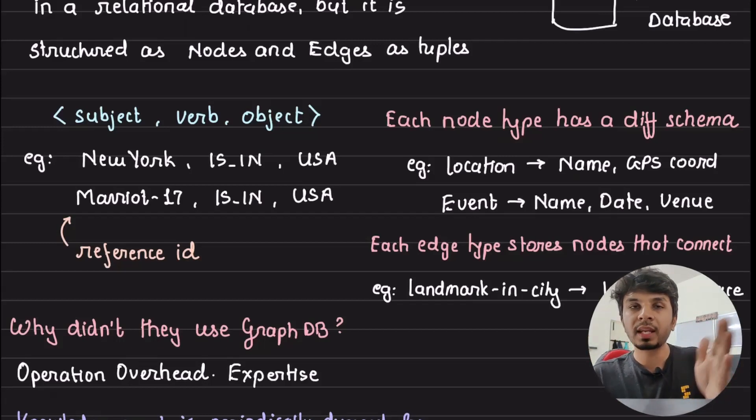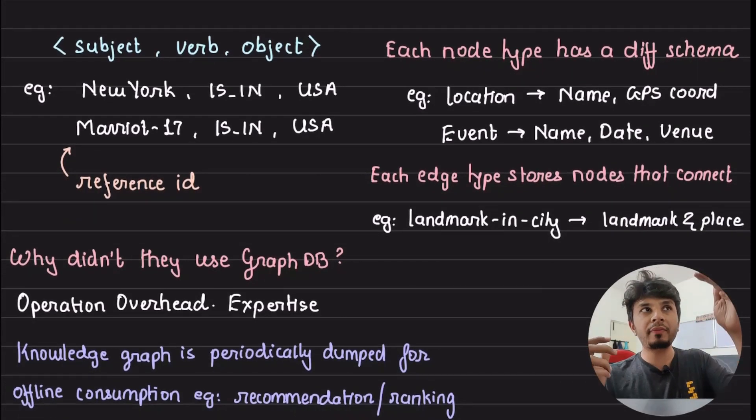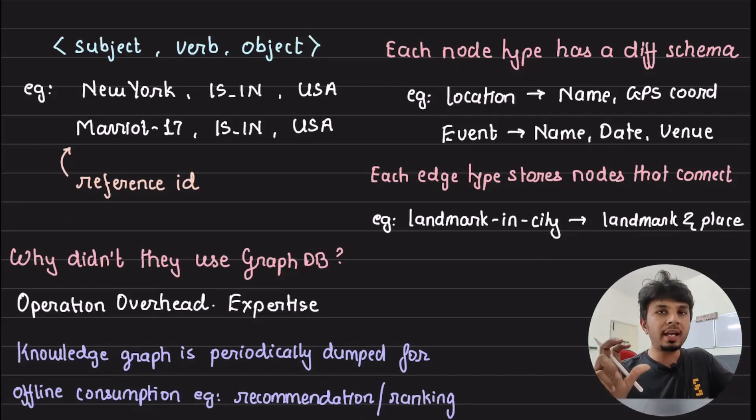Then, similar to nodes, they have edge types. For example, landmark-in-city is an edge type that, hey, Taj Mahal is a landmark in the city of Agra, right? So this is how your relationship is defined.